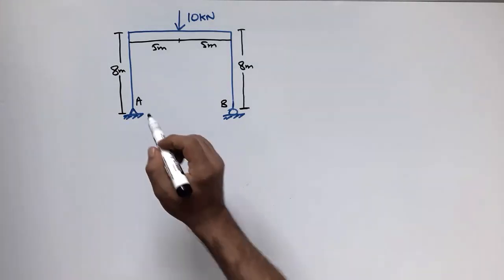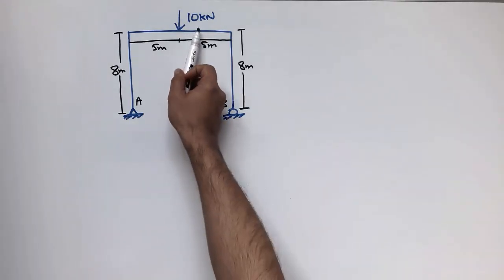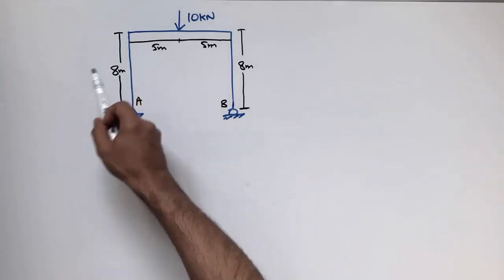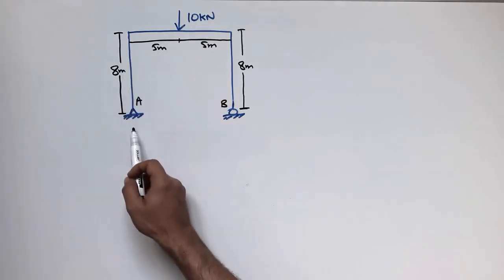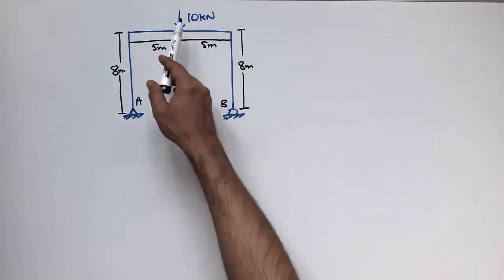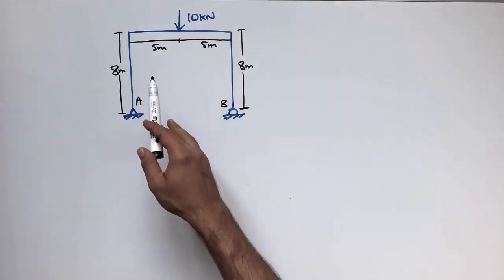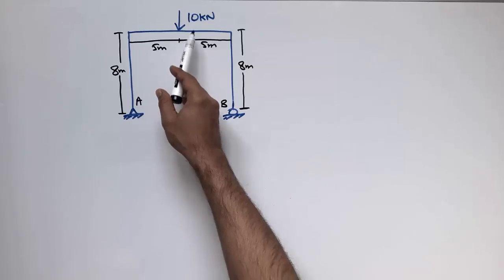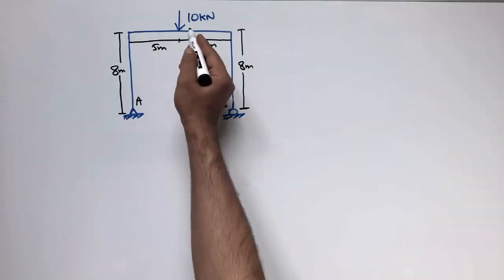To draw the shear force and bending moment, we first calculate the support reactions. This is point A and this is point B. Since the 10kN load is acting at the center of this beam, it will be equally divided into each support. If the load were not at the center, you would need to calculate moments at one support to find the reactions.